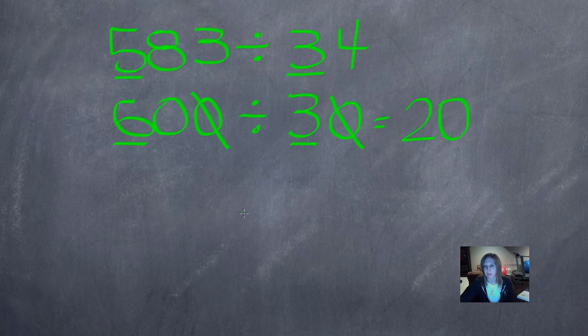Now going back to that problem, is 20 jars really enough for all of his peanut butter? The actual division problem, when you divide it, is 17 jars with 5 ounces of peanut butter left over.